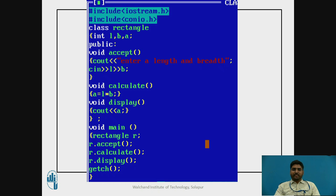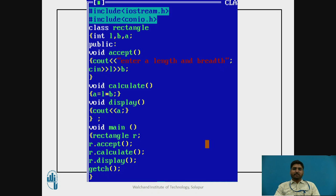The next member function is void display, which uses cout to display the value of a. The class is then terminated. The main program starts with void main. The class name rectangle is followed by object r, and the next lines call r.accept, r.calculate, and r.display. The output for this program will prompt enter the length and breadth — if you enter 5 as length and 6 as breadth, the output will be 30.